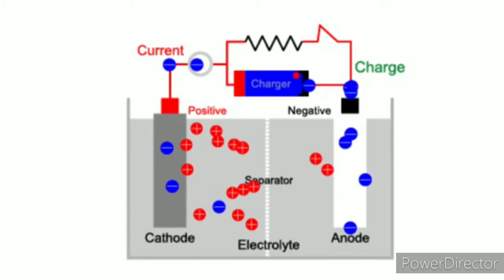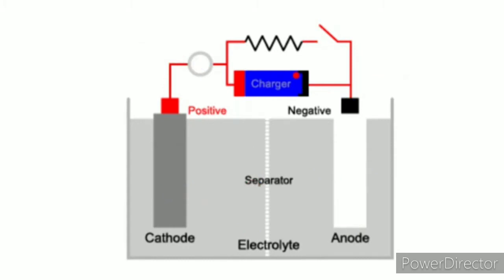Here is a simple animation showing a typical secondary cell. During the discharging process, the electrons flow from the anode to the cathode where the anode is the negative electrode and the cathode is the positive electrode.